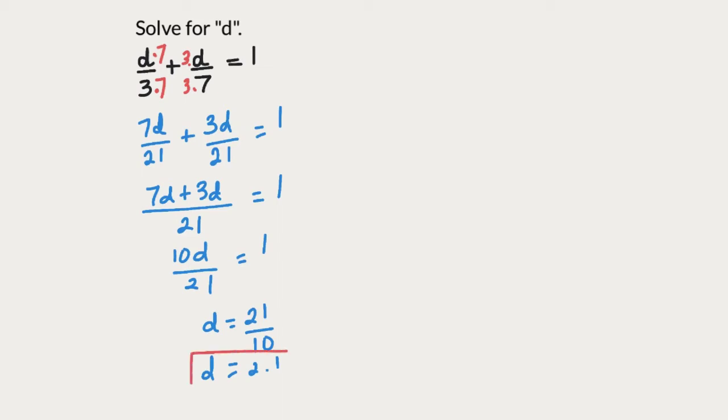We have solved the given equation and d equals 2.1. Let us solve this same equation by another method. Because this equation contains fractional terms, we can simplify this equation by getting rid of these fractional terms. We can do that by multiplying both sides by the least common multiple of 3 and 7 which is 21.